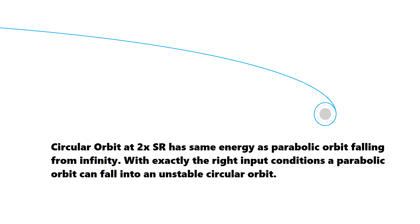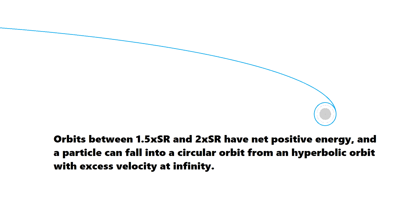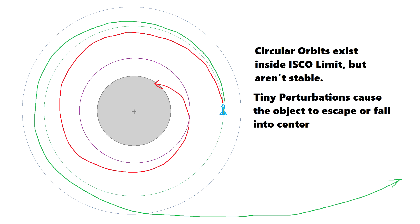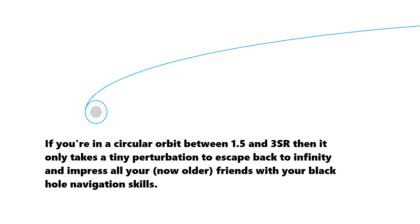Bizarrely, this orbit has zero energy — the same energy as a particle at infinity. In Newtonian physics, all orbits have negative energy because they're trapped inside the gravity well. If you want to orbit inside this radius but outside the photon sphere, you need progressively more and more energy. It's this weird inversion in the energy that makes these close orbits unstable — a little push could make you either fly off to infinity or fall into the black hole. This magic distance of two times the Schwarzschild radius is the closest you could realistically fly a spacecraft and still return to tell the tale. Any closer requires engines which are unlikely to exist outside of science fiction.